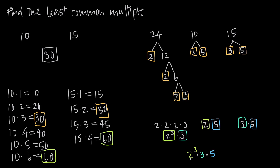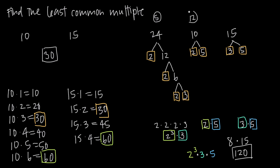So I have 2 cubed, or 2 times 2 times 2, which gives me 8. Then 3 times 5 gives me 15. So 8 times 15 gives me 120. Therefore, 120 is the least common multiple of 24, 10, and 15. I can prove it by dividing 120 by each number: 120 divided by 24 is 5, 120 divided by 10 is 12, and 120 divided by 15 is 8. So 24, 10, and 15 all go evenly into 120, confirming it's a multiple of all three.